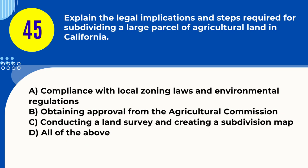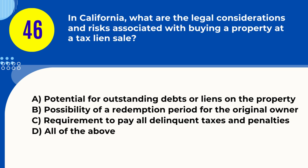Question 45. Explain the legal implications and steps required for subdividing a large parcel of agricultural land in California. A. Compliance with local zoning laws and environmental regulations B. Obtaining approval from the Agricultural Commission C. Conducting a land survey and creating a subdivision map D. All of the above. Answer: D. All of the above. Explanation: Subdividing agricultural land requires compliance with zoning laws, environmental regulations, agricultural commission approval, land surveys, and subdivision maps.